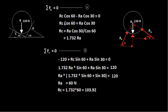From the horizontal equilibrium equation, RC equals 1.732 RA. Keeping this result, we now apply the vertical equilibrium condition: summation of forces in the y-direction equals 0. There are three forces acting in the vertical direction.